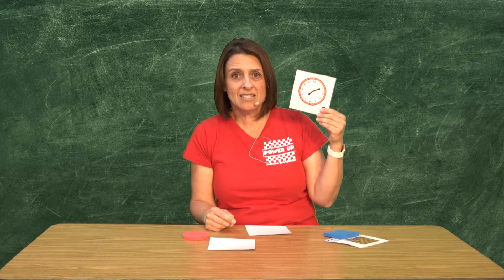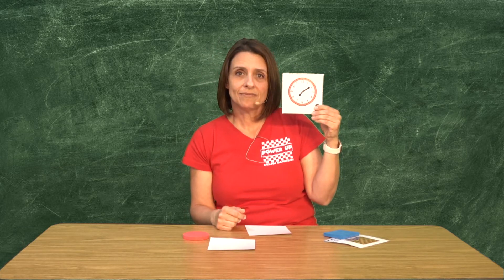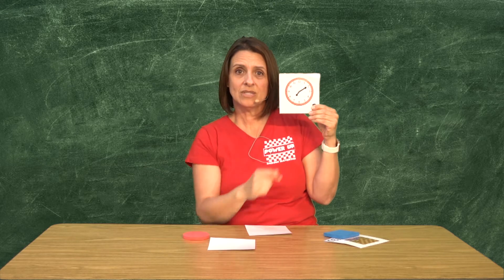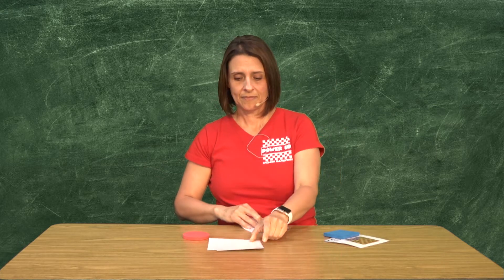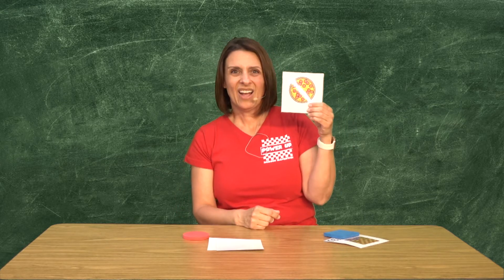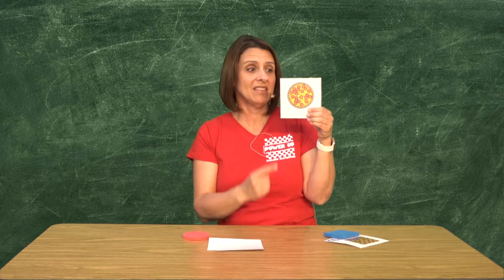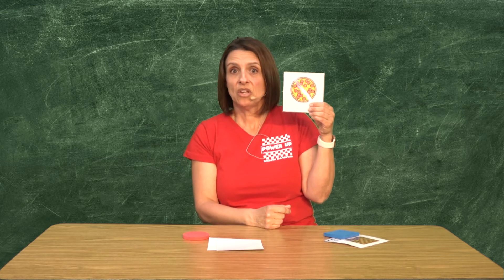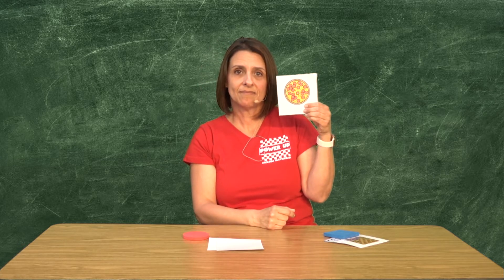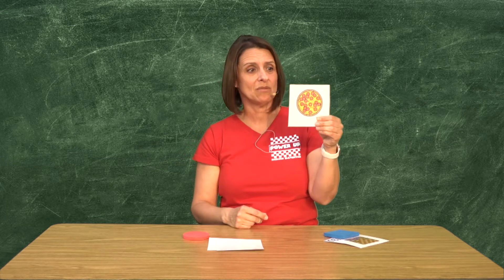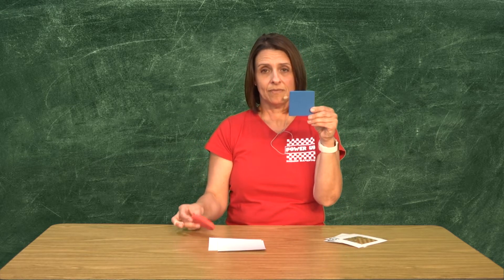Yo pienso que varios de ustedes tienen esto en su casa o en el salón en la escuela: un reloj. El reloj es un círculo. No tiene esquinas como el cuadrado. ¿Y a cuántos de ustedes les gusta comer pizza? Pizza normalmente es en la forma de un círculo. No tiene esquinas y es una línea que continúa. A mí me gusta mucho. Así que les he enseñado de un cuadrado y un círculo.